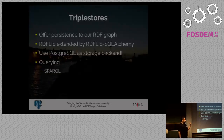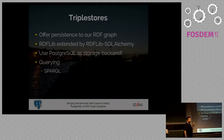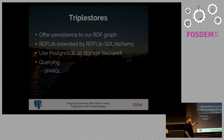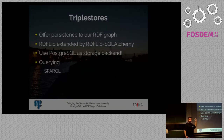To store our triples, we need triple stores, which offer persistence to our graph — a way to put it on disk, index it, and query it. We used RDFLib, which is a library in Python, and an extension called RDFLib SQLAlchemy. There used to be an extension that connected RDFLib directly to Postgres, but it's now abandoned, and the author says to use SQLAlchemy instead. So we decided to use Postgres to store all these triples, and we let RDFLib handle the conversion from relational to graph.